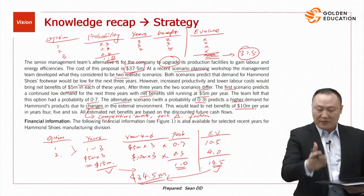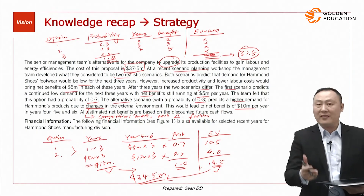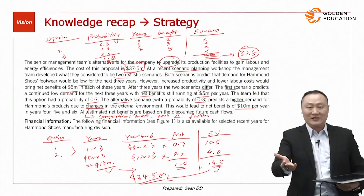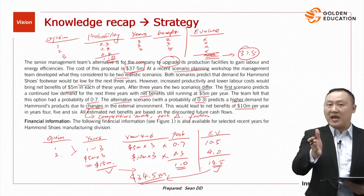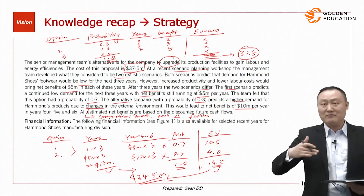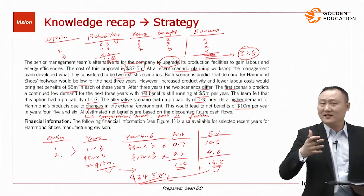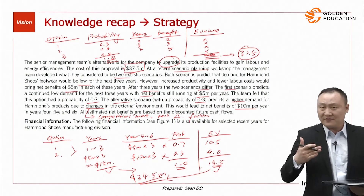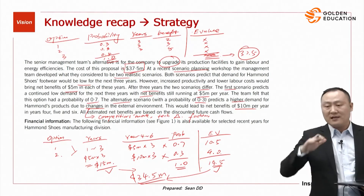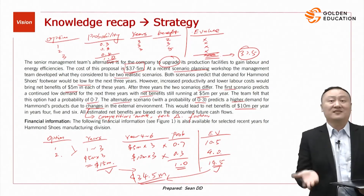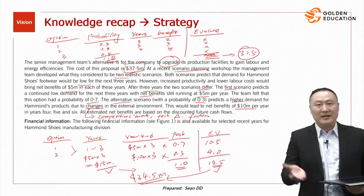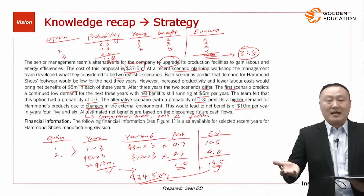Financially, the investment appears insufficient — the cost of $37.5 million exceeds the expected benefit of $34.5 million. However, from a non-financial perspective, this investment is necessary because the machines are too old — it is a necessary evil. We have to invest if we want to continue this business. So financial and non-financial analysis give two different suggestions: financially not good, but non-financially necessary due to external environmental changes.